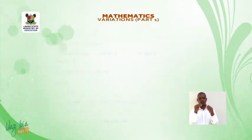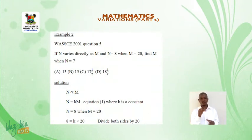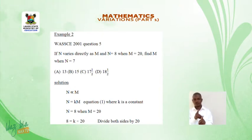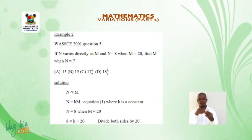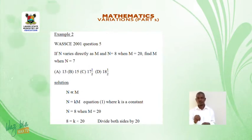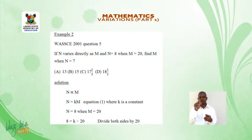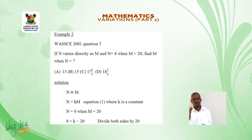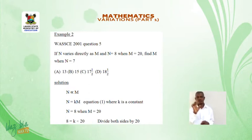Example 2. WASCE 2001, Question 5. If n varies directly as m, and n = 8 when m = 20, find m when n = 7. Options: a. 13, b. 15, c. 17.5, d. 18.5.